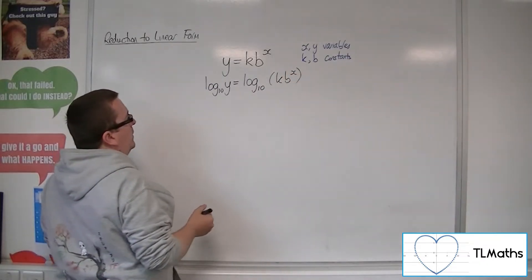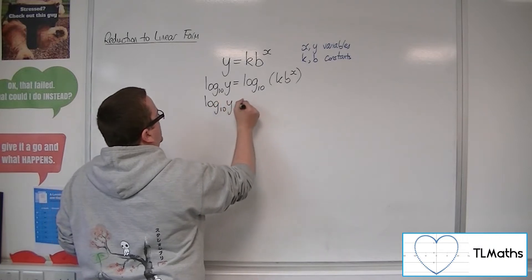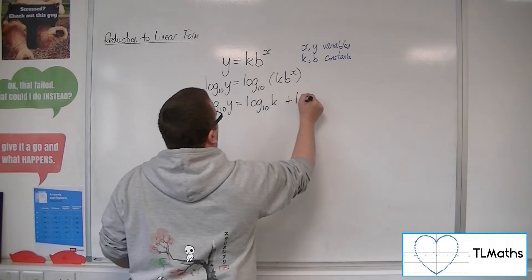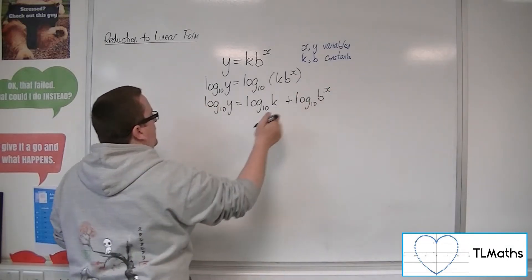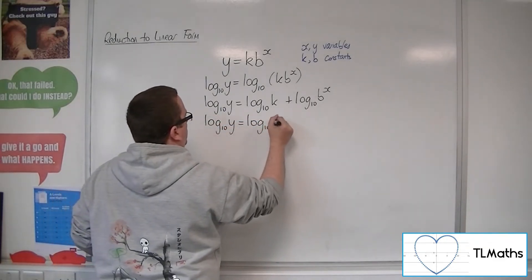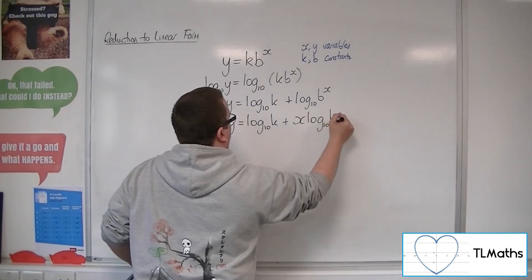Now this logarithm can be broken apart. So we'll have log base 10 of k plus log base 10 of b to the x. Now, that x can come down to the front like so.